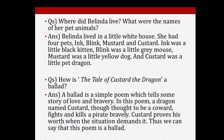Question: Where did Belinda live? What were the names of her pet animals? Answer: Belinda lived in a little white house and had four pets — Ink, Blink, Mustard and Custard. Ink was a little black kitten, Blink was a little grey mouse, Mustard was a little yellow dog, and Custard was a little pet dragon.